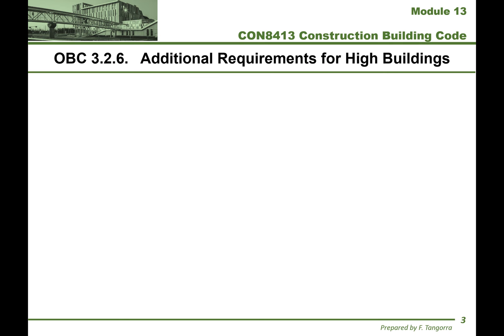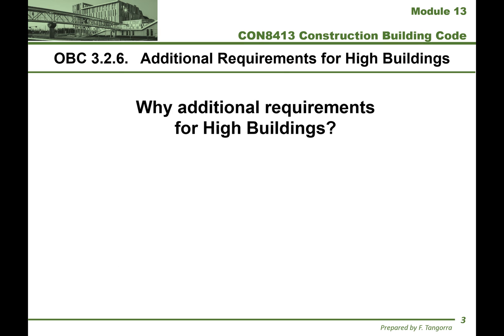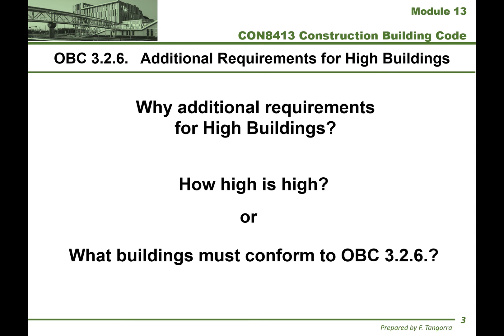Let's get started. For today's topic, we're going to look at whether or not there are additional requirements for high buildings, and even more importantly, how high is high. Specifically, how do we determine whether or not a building falls under the requirements of subsection 3.2.6 of the Ontario Building Code? How do we determine this vertical distance of height that defines a building as high?